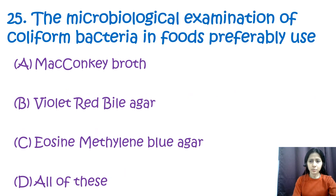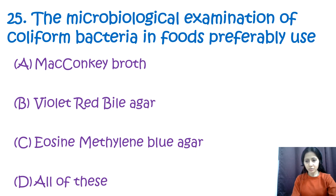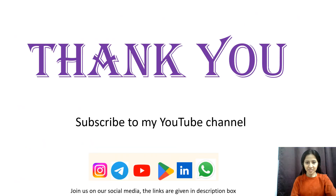Question number twenty-five: the microbial examination of coliform bacteria in food preferably uses option A: MacConkey broth, option B: violet red bile agar, option C: eosin methylene blue agar, and option D: all of these. Do comment the correct answer for this question and also comment your score out of 25. Thank you everyone — subscribe to our YouTube channel; links are in the description box. Enjoy learning!